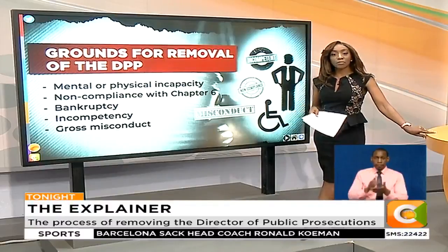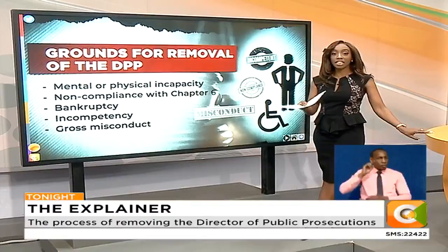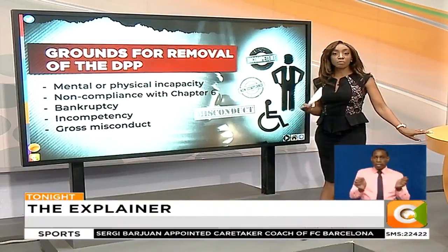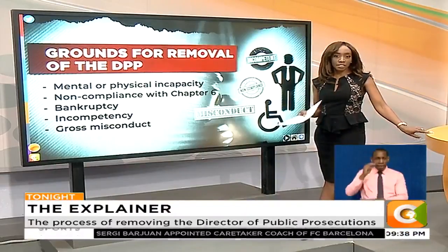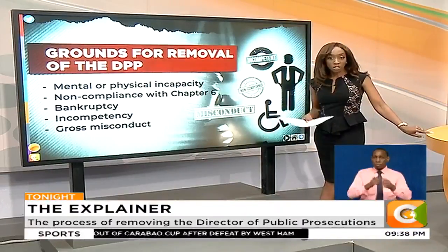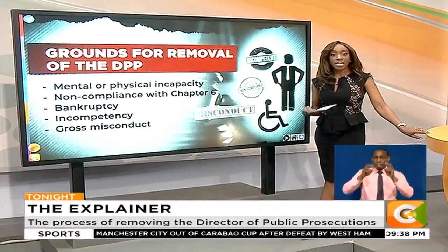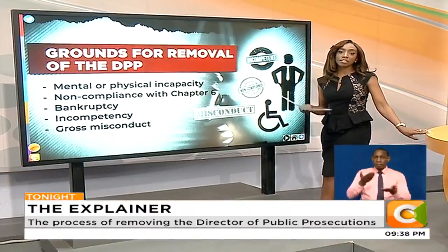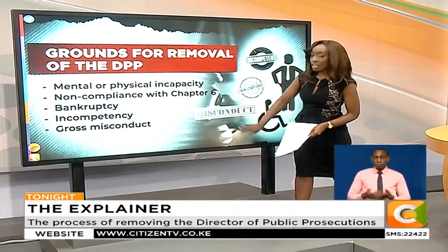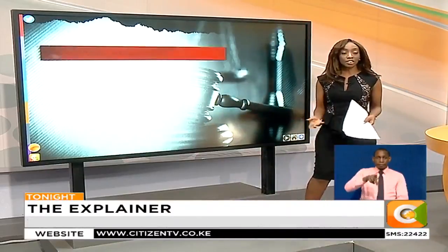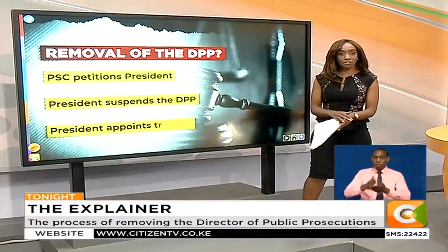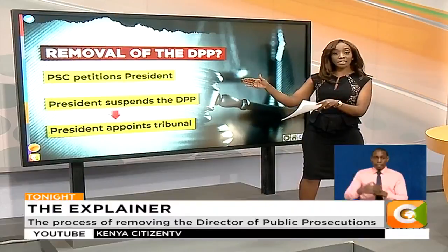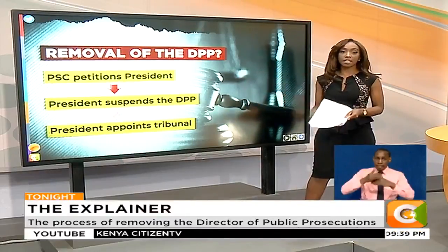What happens next would be that the PSC considers the petitions to see if the allegations meet the grounds set out in law: inability to perform functions of the office due to mental or physical incapacity, non-compliance with Chapter 6, which deals with issues of integrity, bankruptcy, incompetency, or gross misconduct or behavior. If the PSC determines that the allegations satisfy those grounds, they would send the petition to the President. The President shall, within 14 days, suspend the DPP.